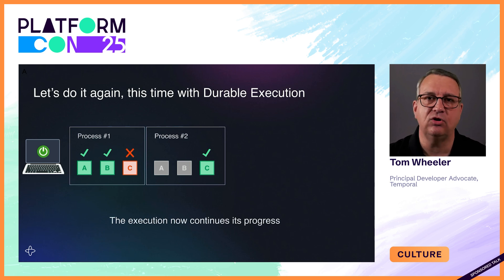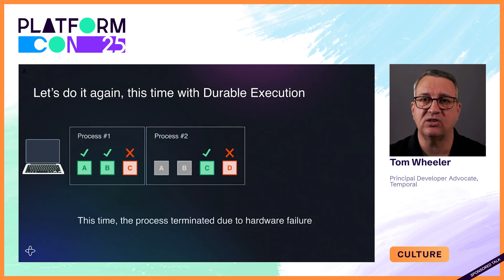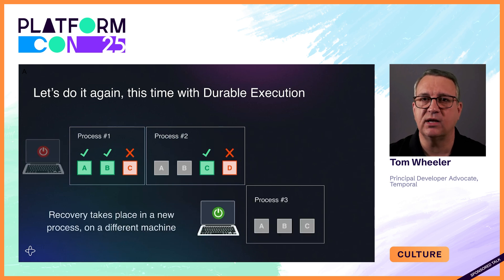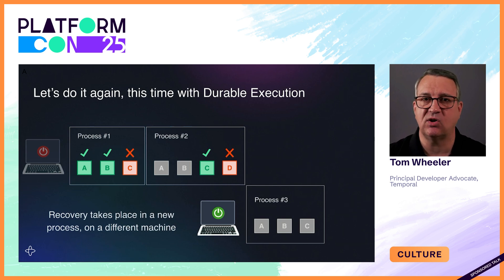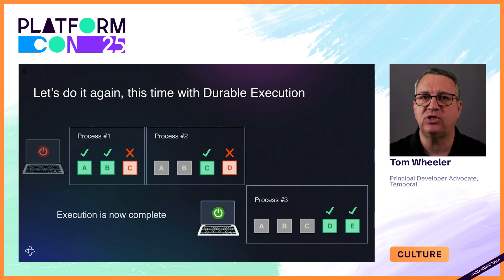Now let's say the execution makes it just one step further and then crashes again — this time due to hardware failure. In this case, execution will continue in a new process on a different machine. Once again, the application state within that new process is the same as it was before the crash, and execution continues with the next step. The application now achieves its goal by running the final step, and the execution is completed successfully.